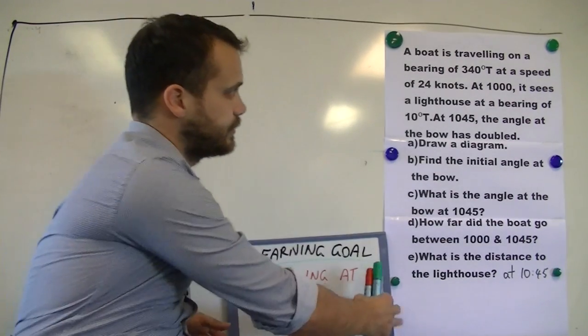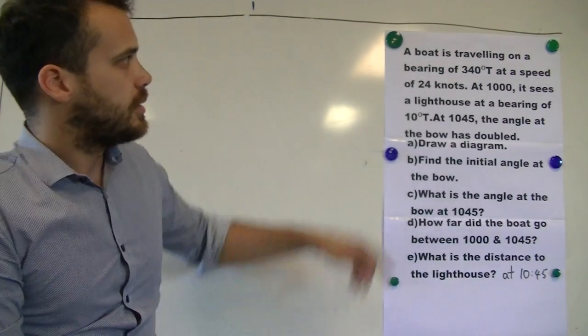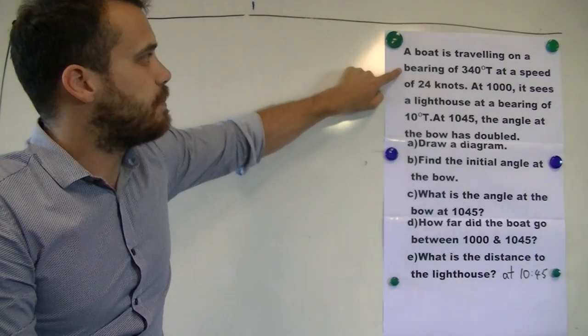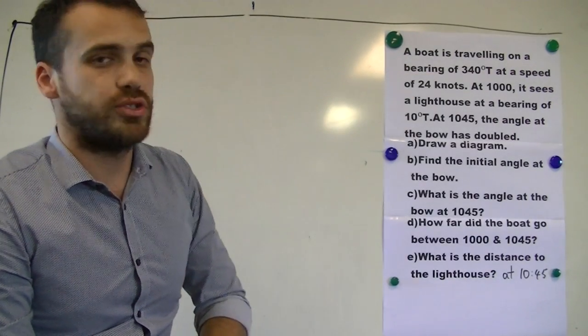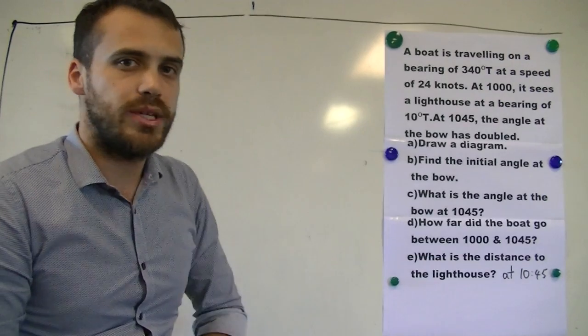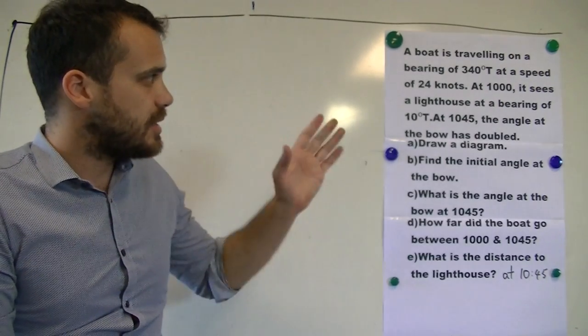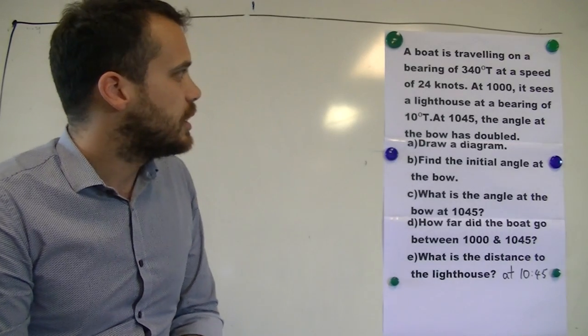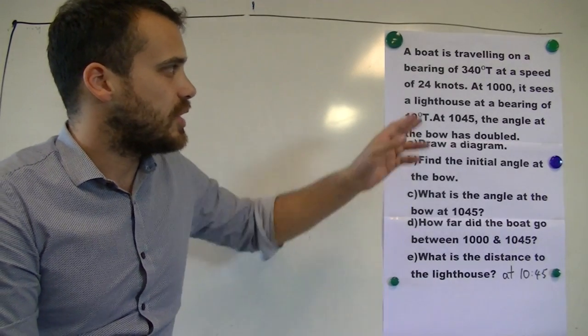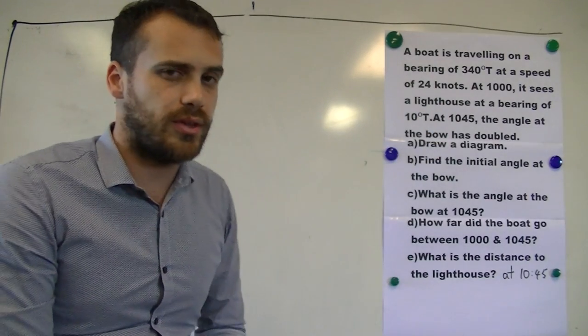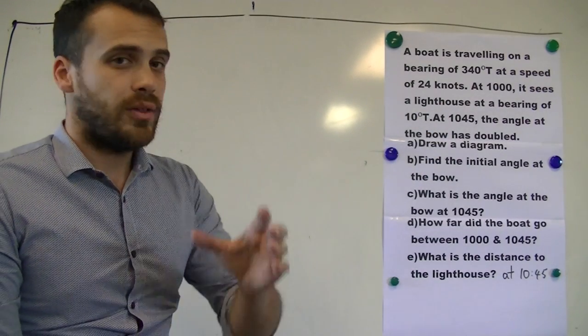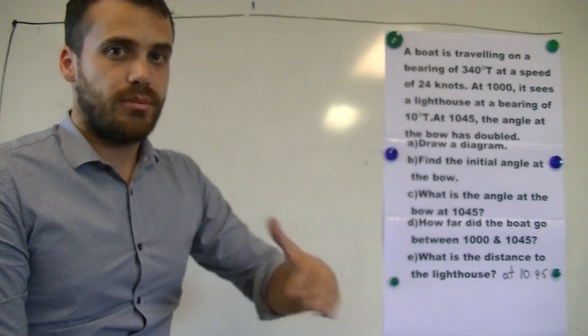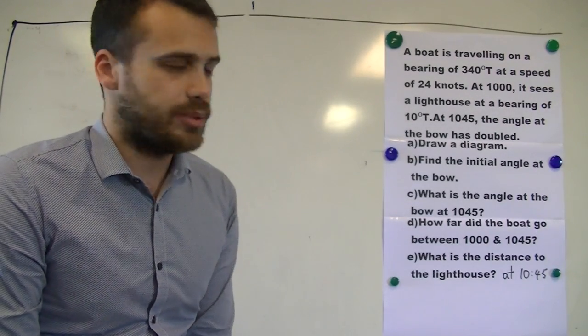Let's take a look. A boat is traveling on a bearing of 340 degrees true at a speed of 24 knots. At 10 o'clock it sees a lighthouse at a bearing of 10 degrees true. At 10:45 the angle at the bow has doubled. That's not going to make a lot of sense to us right now but we're going to go through this so we can see what happens.